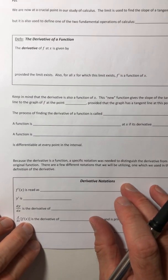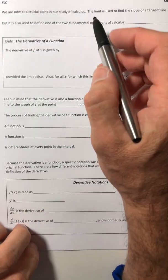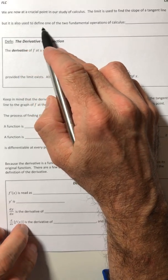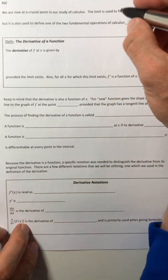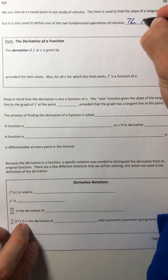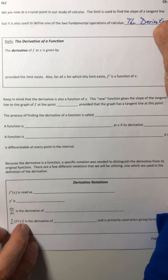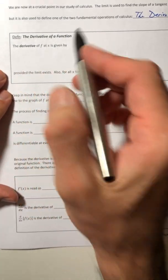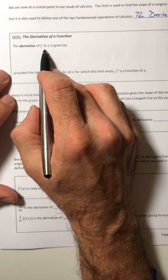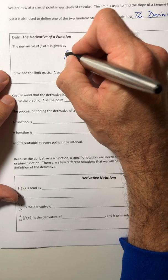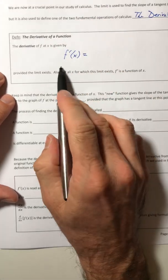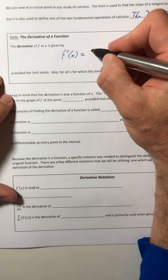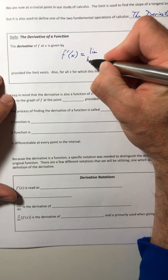Okay, so we are now at a crucial point in our study of calculus. The limit is used to find the slope of a tangent line, but it is also used to define one of the two fundamental operations of calculus: the derivative. So let's go ahead and define it. The derivative of a function - so the derivative of f at x is given by this f with that little apostrophe. So that is f prime of x is equal to that same limit thing we were just working with.